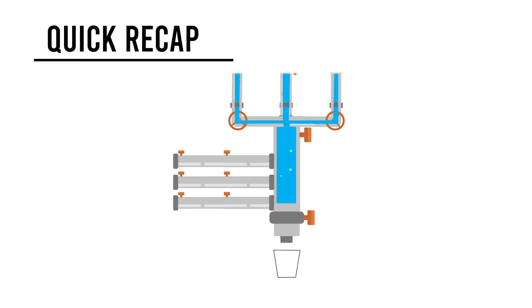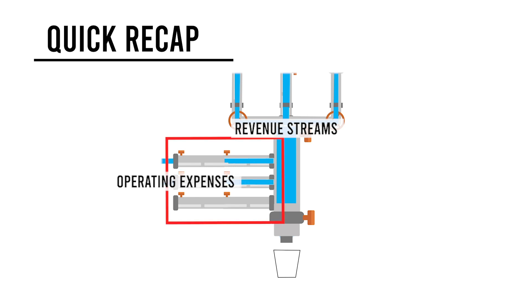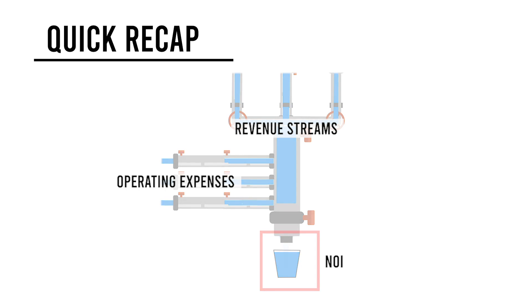Let's recap. A property generates revenue streams, but there are associated costs called operating expenses. What's left flows through to you, the owner, and is called NOI.